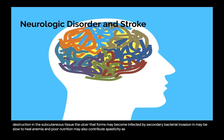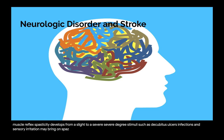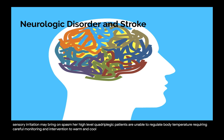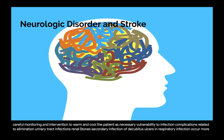As spinal shock subsides following a traumatic injury, muscle reflex spasticity develops from a slight to a severe degree. Stimuli such as decubitus ulcers, infections, and sensory irritation may bring on spasms. High-level quadriplegic patients are unable to regulate body temperature, requiring careful monitoring and intervention to warm and cool the patient as necessary. Complications related to elimination, urinary tract infections, renal stones, secondary infection of decubitus ulcers, and respiratory infection occur more commonly in this population.